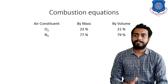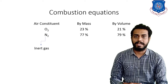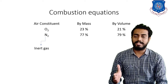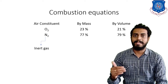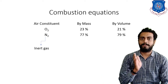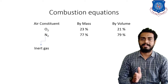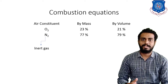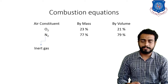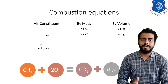Nitrogen (N2) is an inert gas, meaning it will not take part in any reaction. So from the reactant side and from the product side, it will remain as it is. Keep this in mind. Now let us understand the combustion of methane.